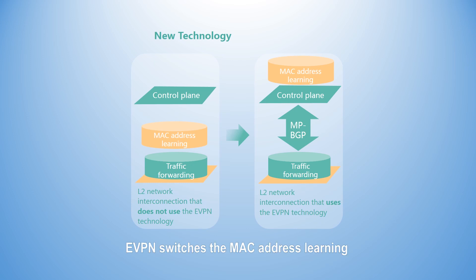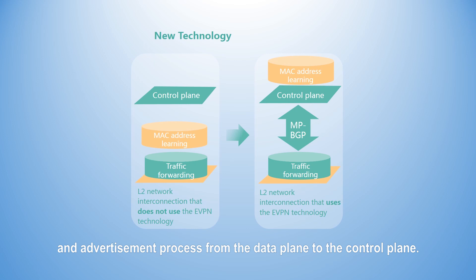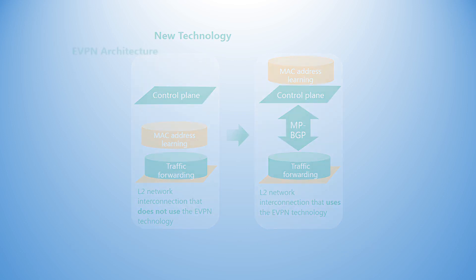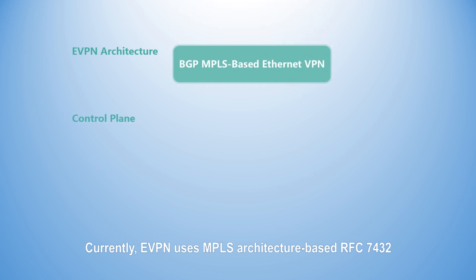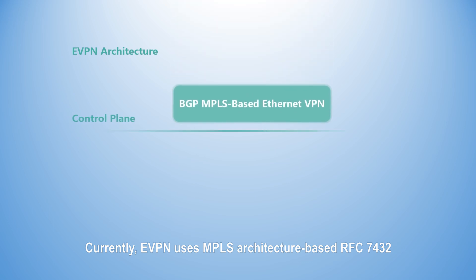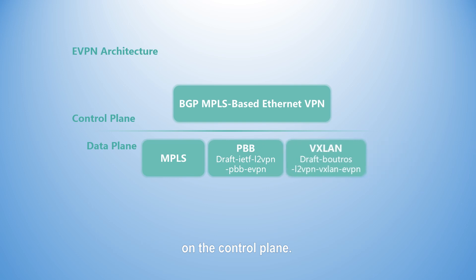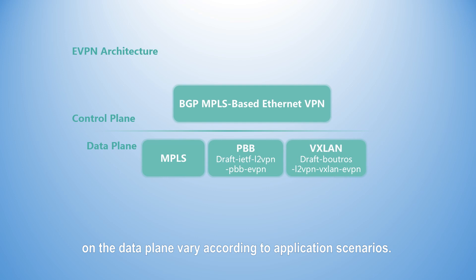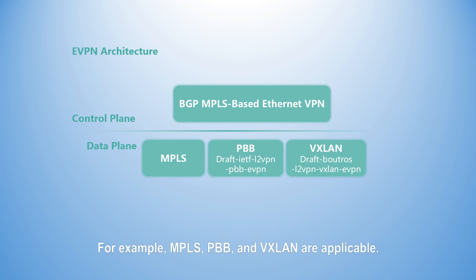Similar to the IP VPN technology, eVPN switches the MAC address learning and advertisement process from the data plane to the control plane. Currently, eVPN uses MPLS architecture-based RFC-7432 on the control plane. However, the encapsulation technologies used on the data plane vary according to application scenarios. For example, MPLS, PBB, and VXLAN are applicable.